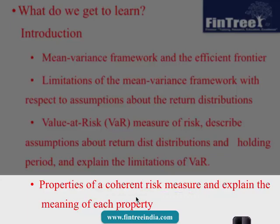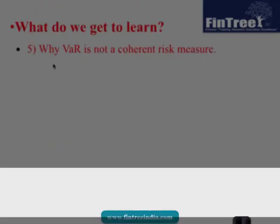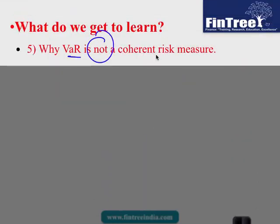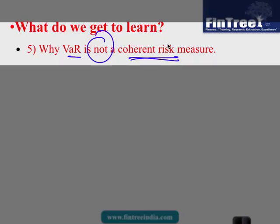Then properties of coherent risk measure and explain the meaning of each property. So in this learning outcome we discussed in order for a risk measure to be appropriate what properties should it have. And then there are some properties that we will have to look at and we will have to learn to identify which measure satisfies which type of property. Then why VaR is not a coherent risk measure, which means that it does not satisfy all the properties which are listed there. There are four of them and therefore VaR would not be a coherent risk measure in certain scenarios.